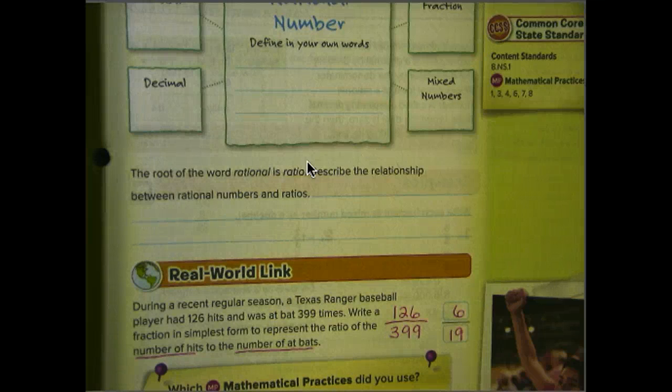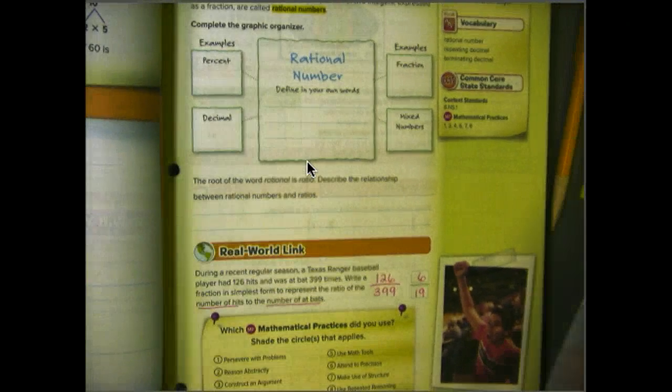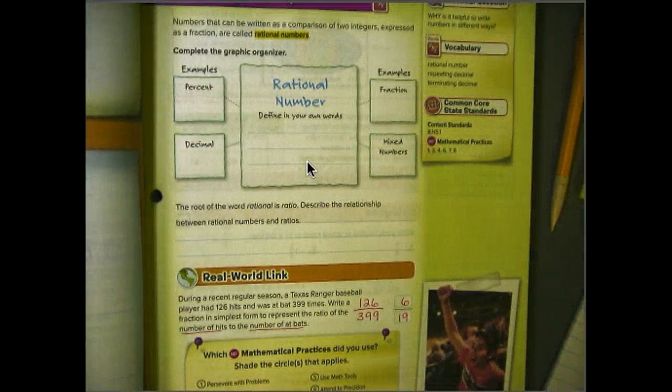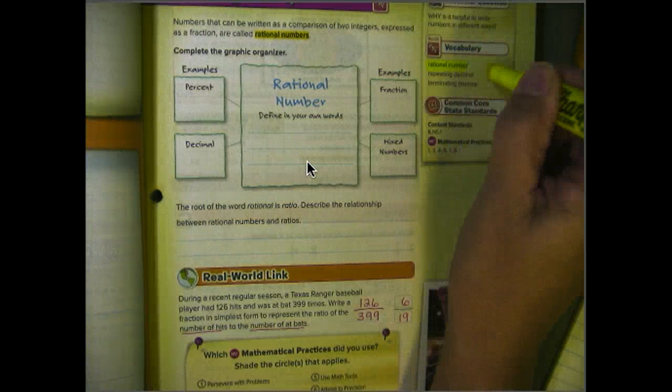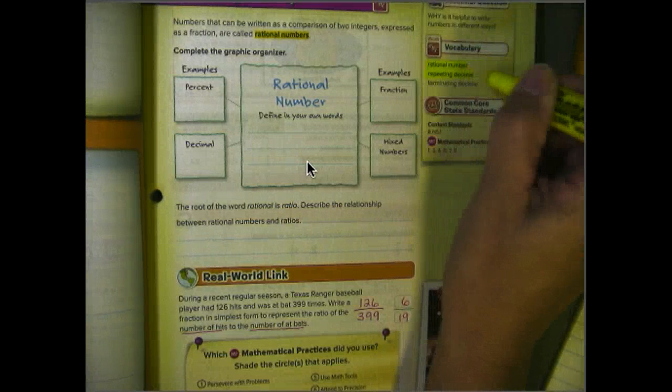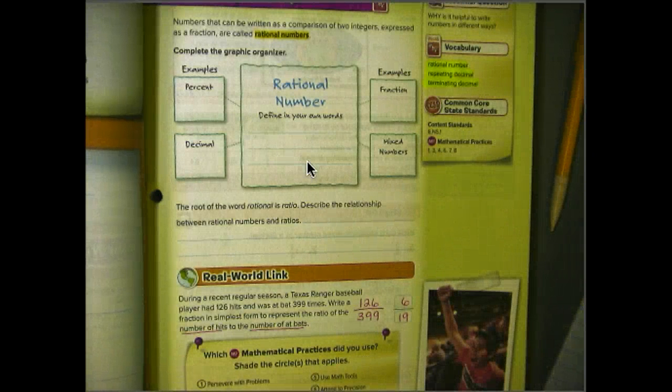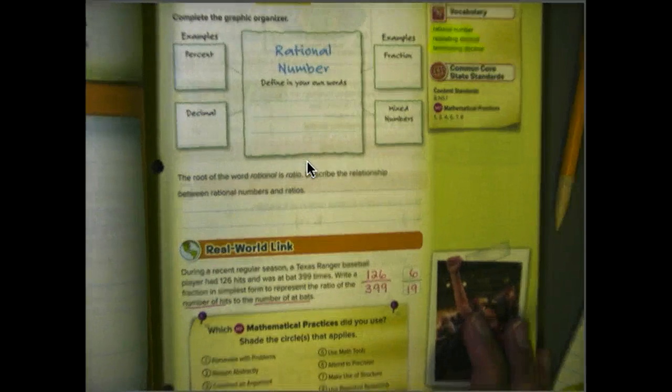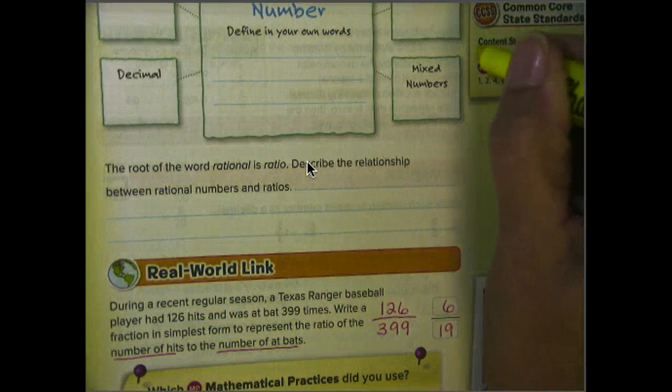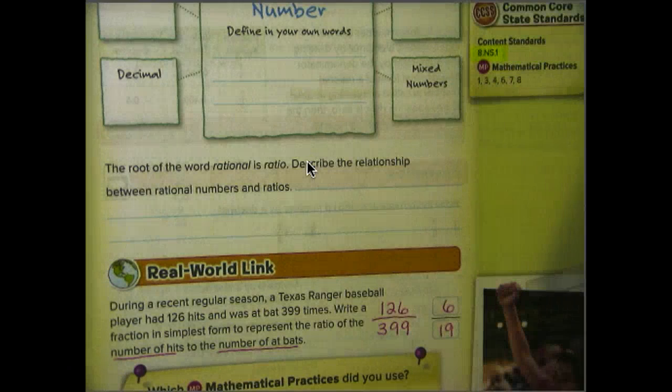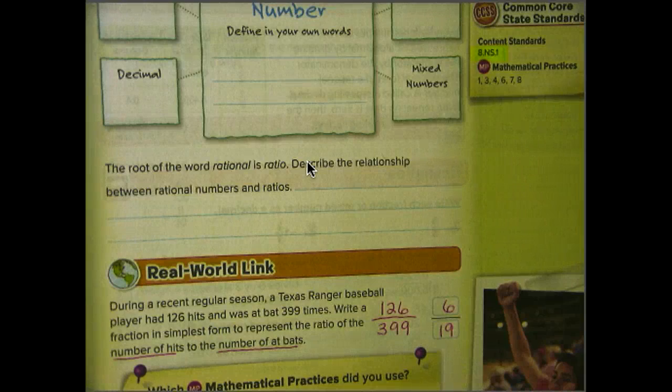So remember, this first page is going to be important for you because it's going to tell you, first of all, what we're going to be doing in this lesson. Second, it's going to give you some important vocabulary words. And those are, for this particular section, rational numbers, repeating decimals, terminating decimals. It's also going to tell you which standards we're going to be looking at. And that's also going to be very important to us as we are going to be learning 8NS1 as our standard. And we'll talk about that standard in class.